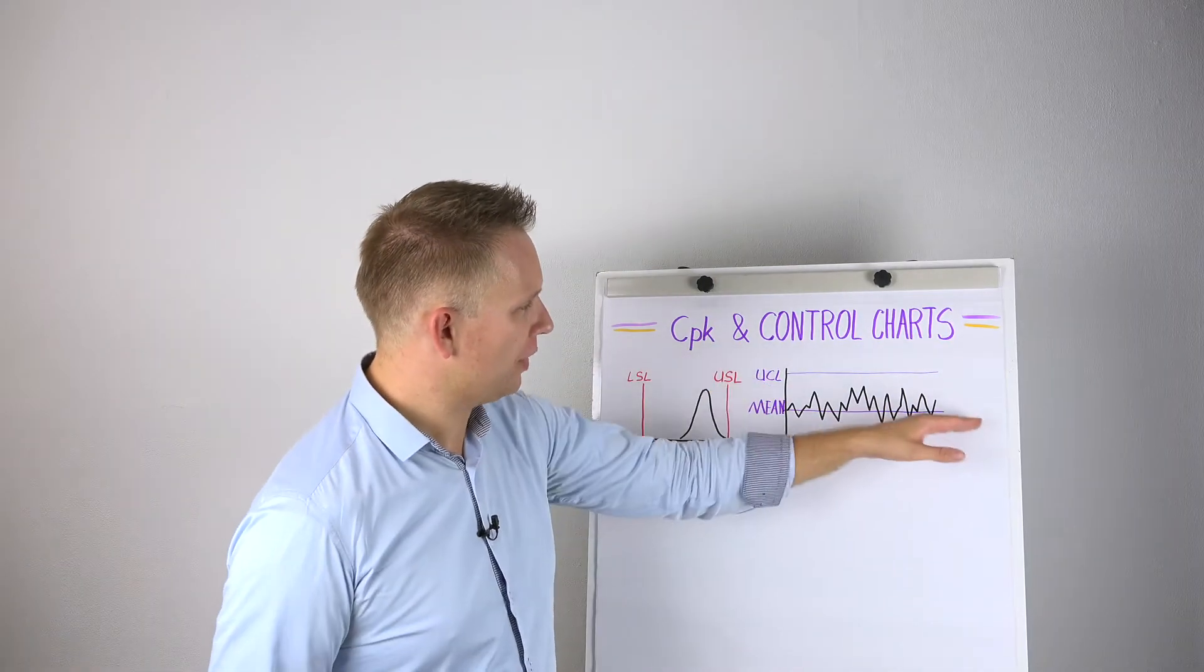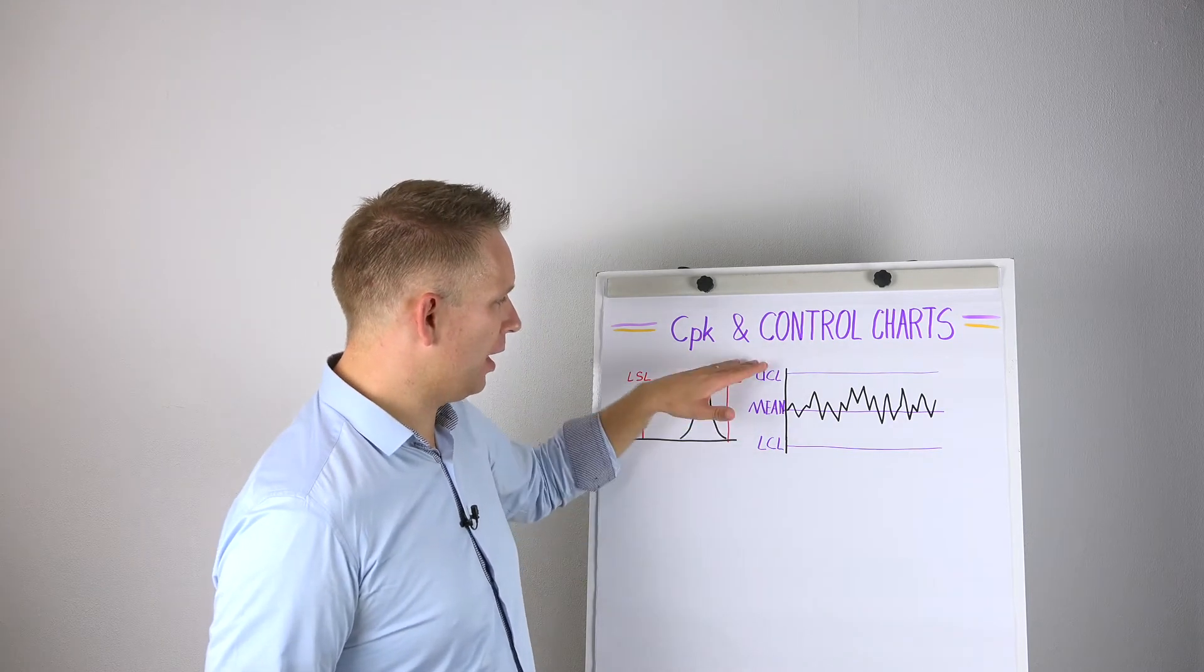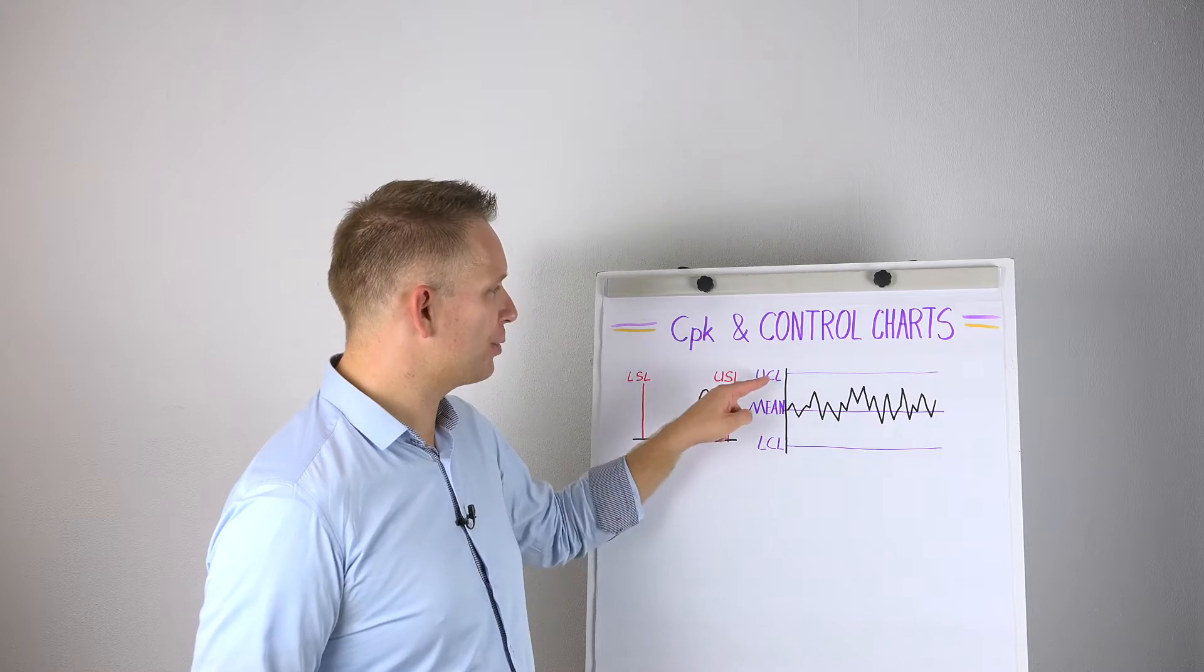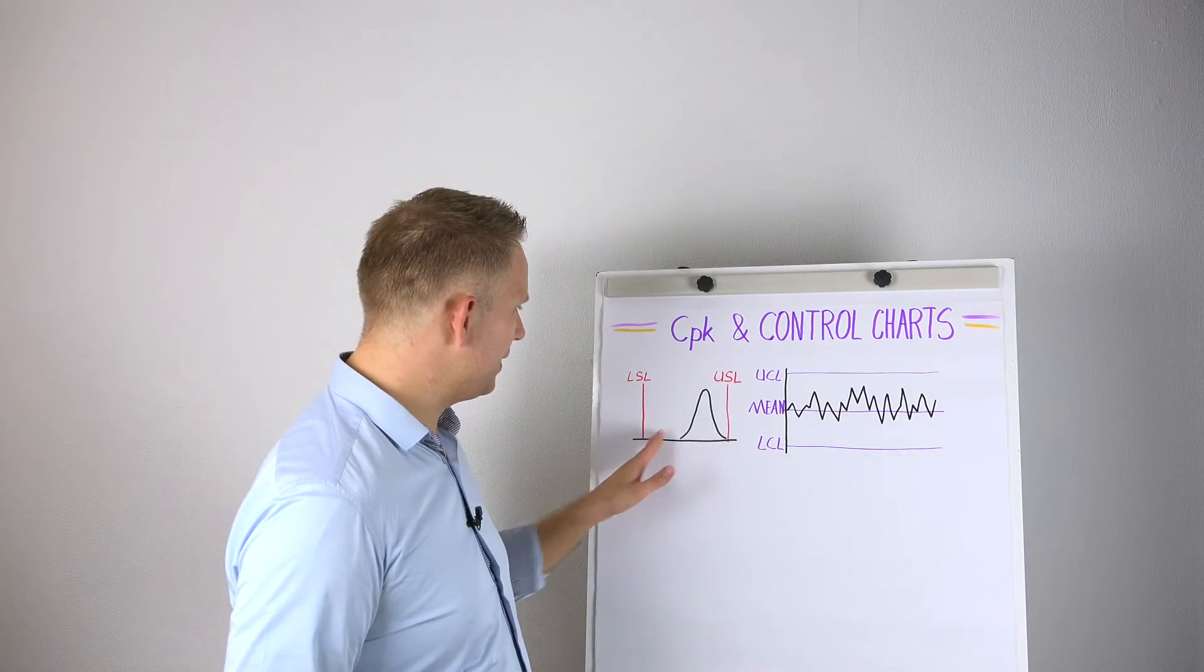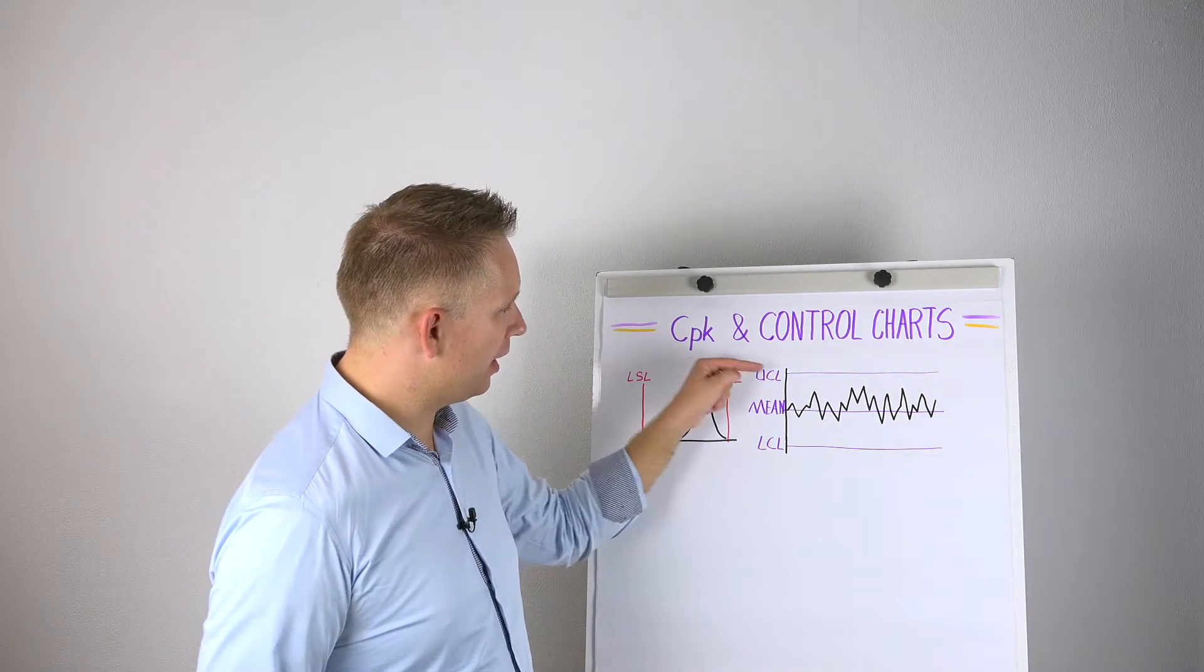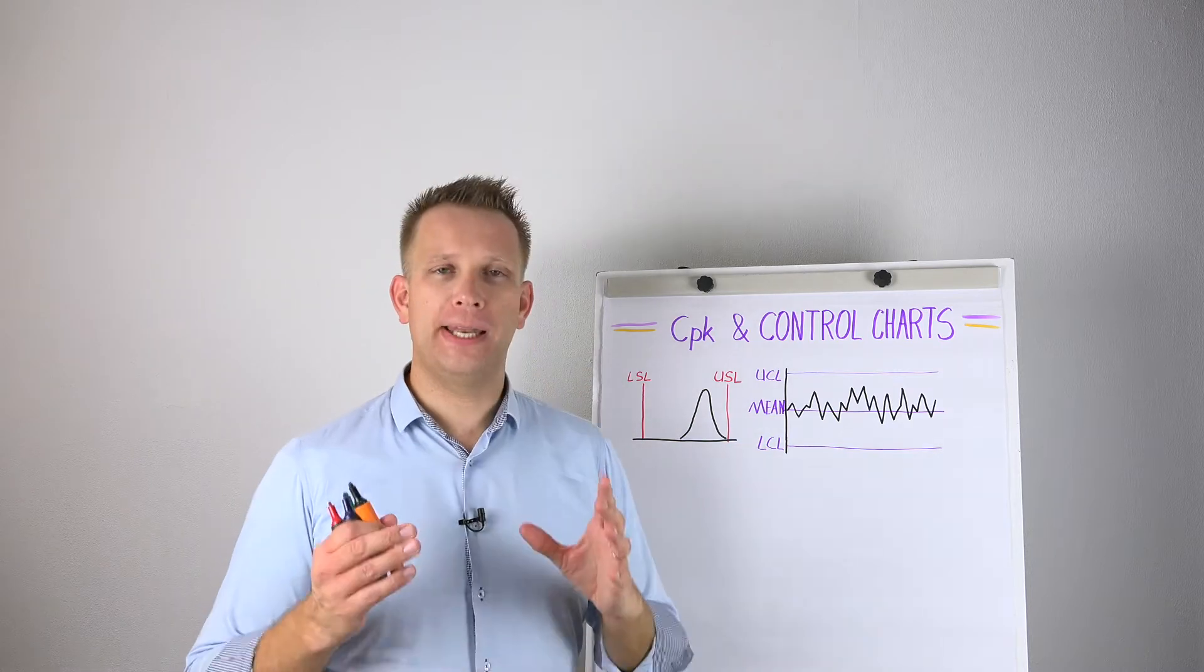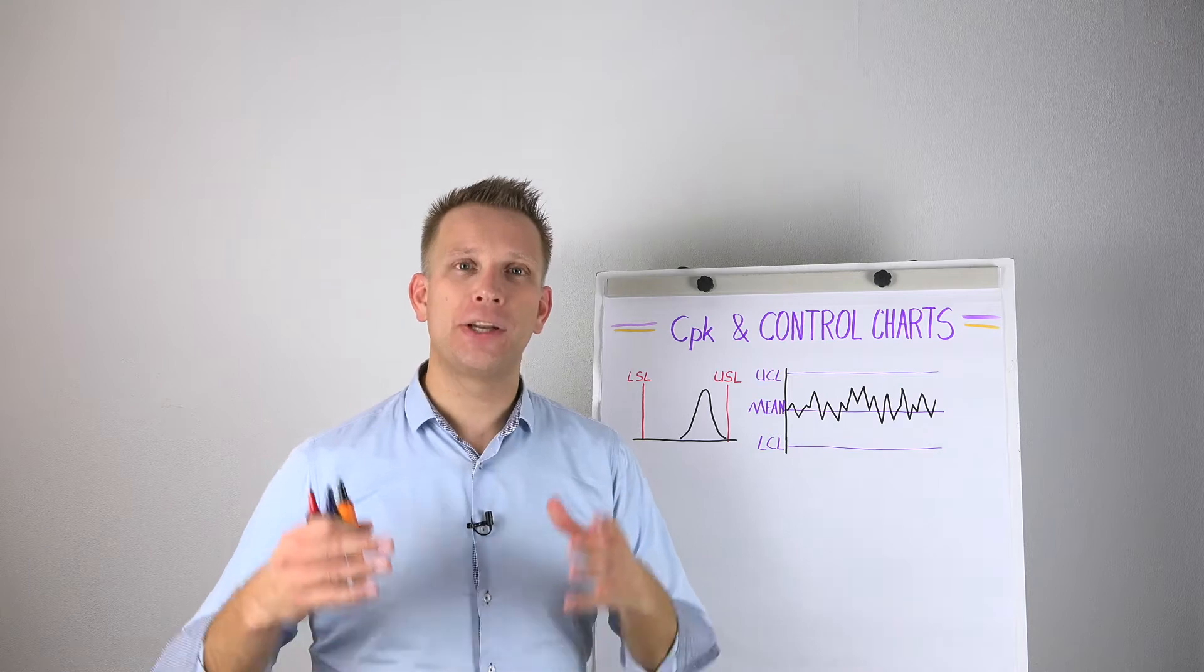A control chart, so a run chart, it also has limits, so an upper and a lower limit. But these are not specification limits, these are control limits. And these two red limits, they have almost nothing to do with the upper and lower specification limits. This is purely what you have observed in the process.